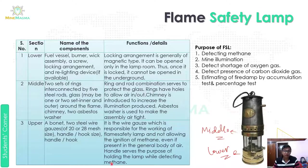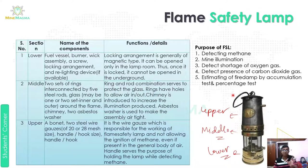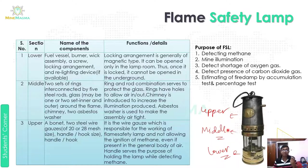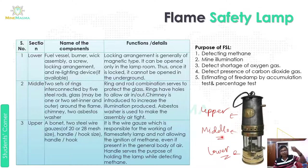The upper part consists of: a bonnet, two steel wire gauzes of 20 to 28 mesh size, and a handle or hook. The wire gauze is responsible for the working of the flame safety lamp — it prevents the ignition of methane even when the lamp is present in a gas-containing atmosphere, stopping the methane gas from burning. The handle serves the purpose of holding the lamp while detecting methane, like a lantern held in hand.